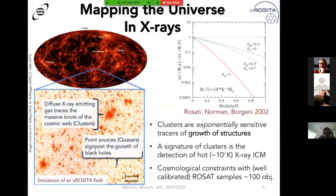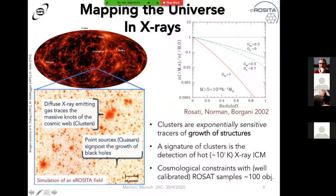When you look at the knots in the large-scale structure to larger distances, you have a new tool to study cosmology. We know since many years of X-ray astronomy that when you look at the blank extragalactic sky, most of what you see are growing black holes — quasars and active galactic nuclei — and as extended sources, the clusters of galaxies, the most massive structures in the universe.